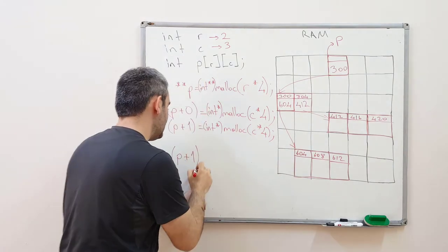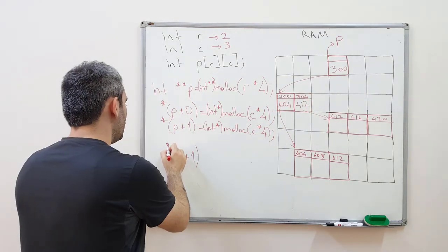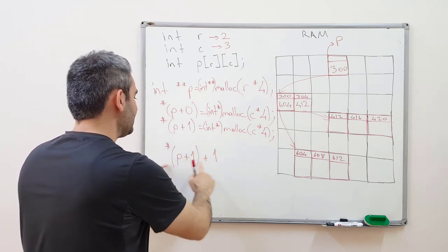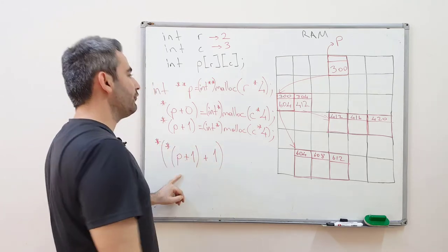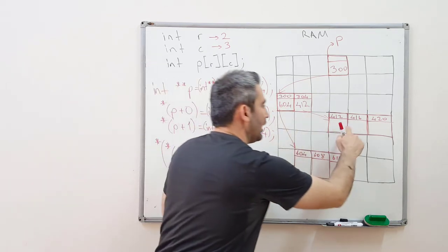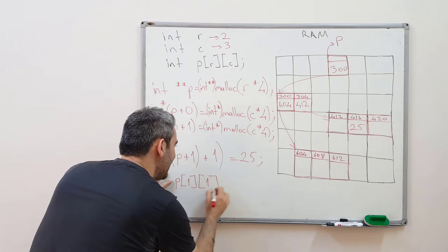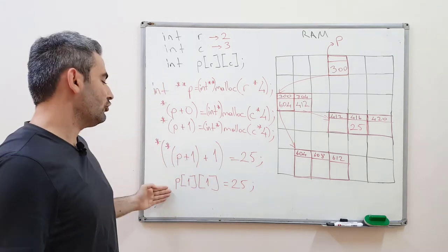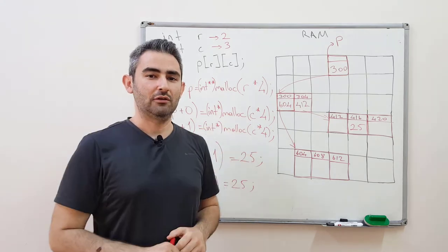Now let's fill them with values. If I say p plus 1, that means 300 plus 4 equals 304. Resolving 304 gives 412. Adding 1 to 412 gives 416, and resolving 416 lets me assign a value — say 25. This pointer arithmetic notation is equivalent to the bracket index notation. This is the beautiful part: if you understand pointer arithmetic, you can use either notation, and since the bracket notation works, I can fill all elements inside a loop. Now let's see this on actual code.